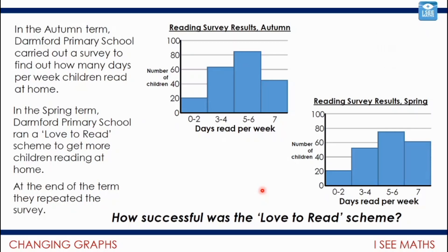What's different? We can see there are more children now who read every day — there was just over 40, maybe 45 or so that read seven days a week, and now that's gone up to about 60. The number that read three or four times has gone down a little bit, and five to six times a week has also gone slightly down. But there's a massive increase in children reading seven days a week. However, we've still got around about the same number of children that read zero to two days per week. So the project was successful at getting children who already read to read more days, but it didn't take those children that don't read very much and get them reading a lot more. Here I have to really interpret the graphs to think about what change has taken place.